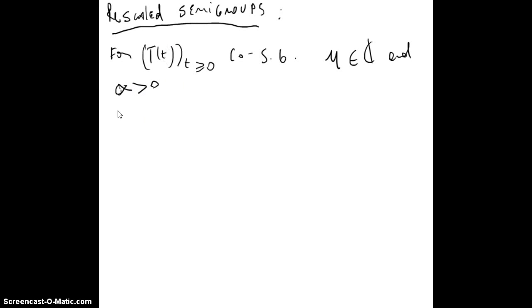We define the re-scaled semigroup as S(t) equal to e^(μt) T(αt) for t greater or equal to 0.